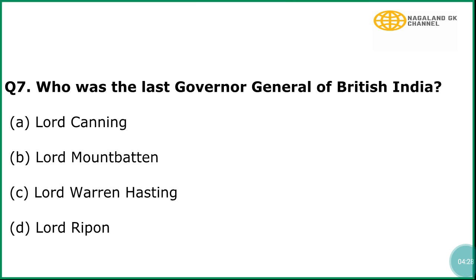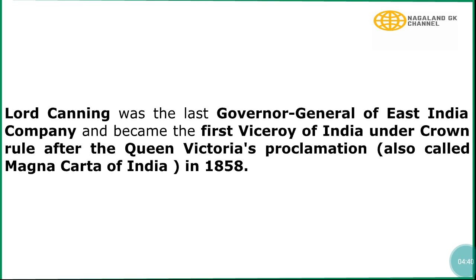Question number 7: Who was the last Governor General of British India? The correct answer is option number A, Lord Canning. In explanation, Lord Canning was the last Governor General of the East India Company and became the first Viceroy of India under Crown Rule after Queen Victoria's Proclamation, also called the Magna Carta of India, in 1858.